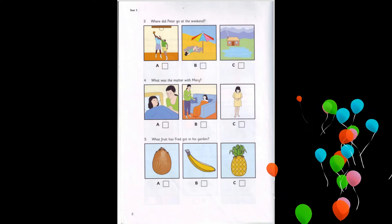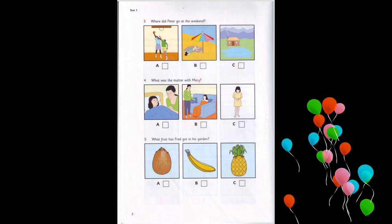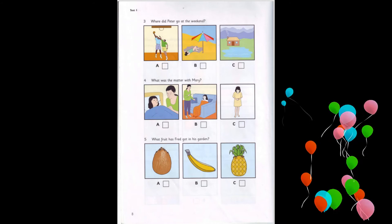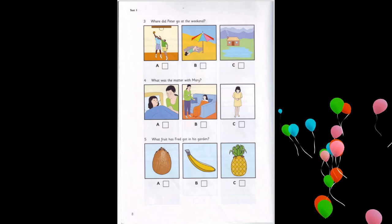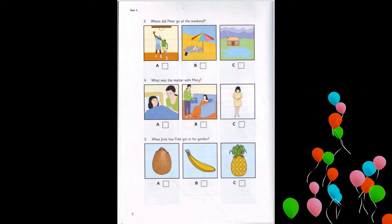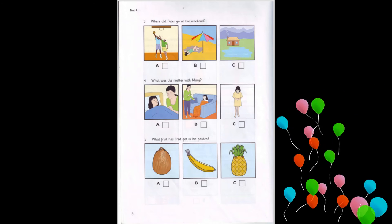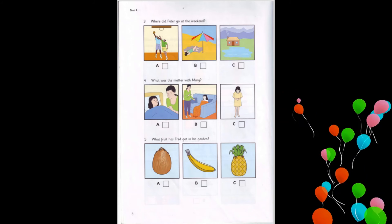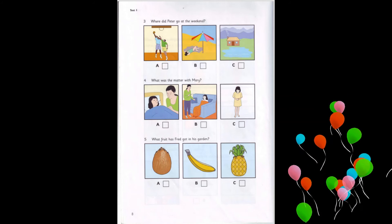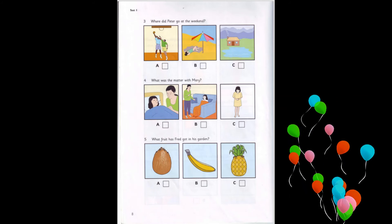Now listen to part four again. One. What does Daisy want for supper? I'm hungry, Mum. What would you like for supper, Daisy? A burger? No. I had a burger at school today. Can I have some pasta? Yes. With some juice and bread? I'm thirsty. But I don't want any bread.